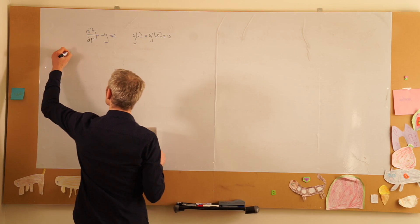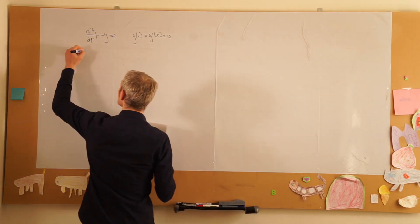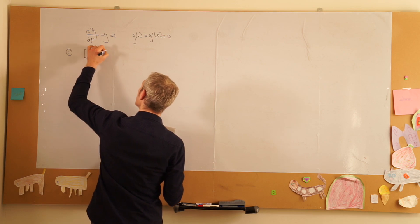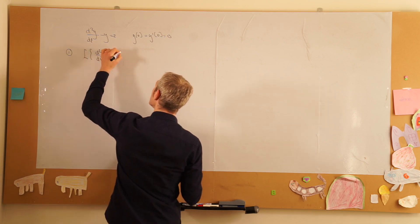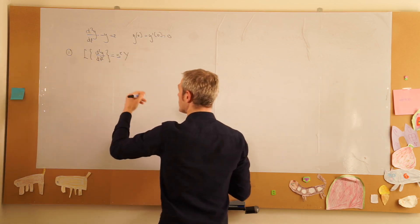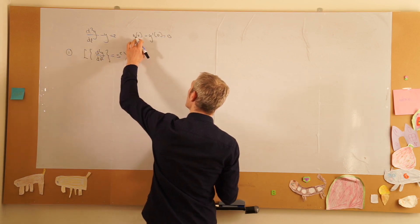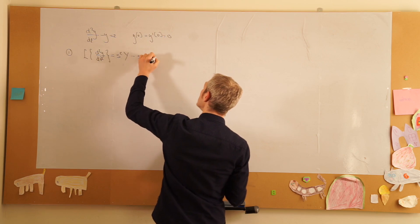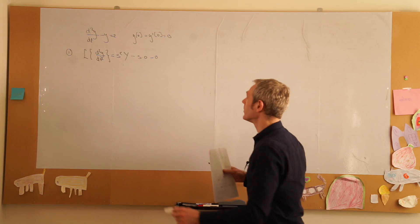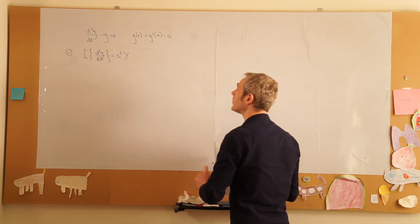Step one, take the Laplace transform and we know that the second derivative of y, so the Laplace transform of the second derivative of y is equal to s squared Y(s), and I'll just write Y, minus s times y(0) minus y prime(0), and these are both 0, so we can write this slightly more easily. So if we use the initial conditions, we are simply left with that.